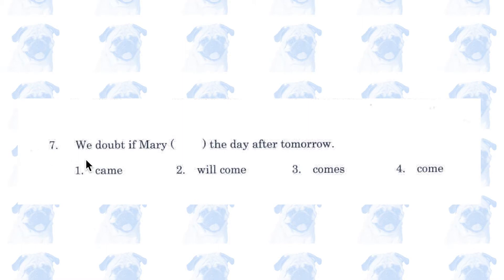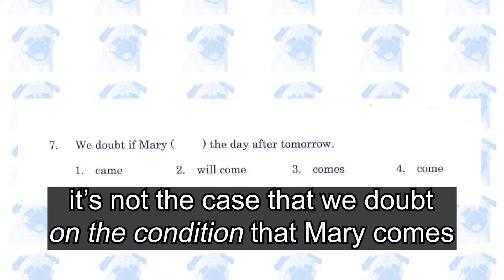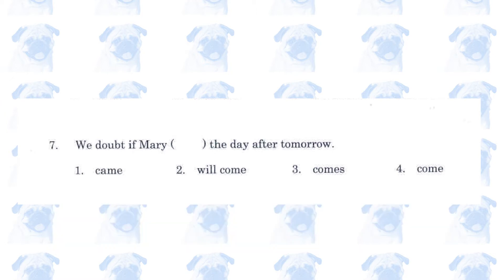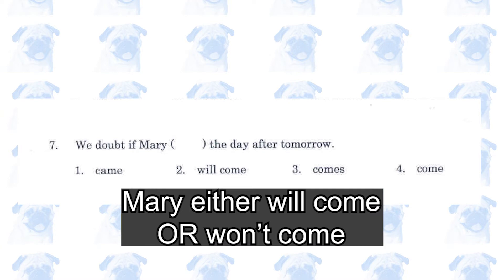Number 7. 'We doubt if Mary came / will come / comes / come the day after tomorrow.' Number 2. As I explained in question 1, this 'if' clause doesn't express a condition, in which case you can use 'will'. Instead, this 'if' clause expresses two possible outcomes: one is that Mary will come, and the other is that she won't come.